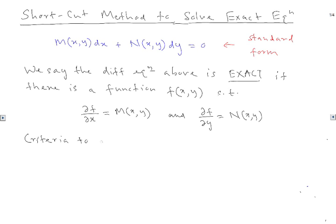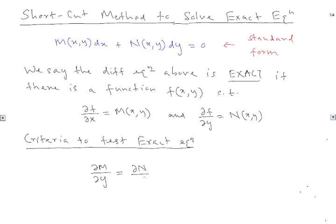The criteria to test exactness: the partial derivative of M with respect to y equals the partial derivative of N with respect to x. If this condition holds, we call the equation exact. The plus sign and the order — dx first, dy second — are really important in the standard form.